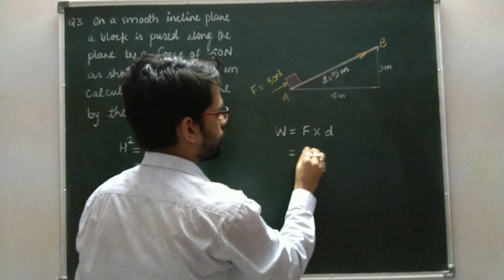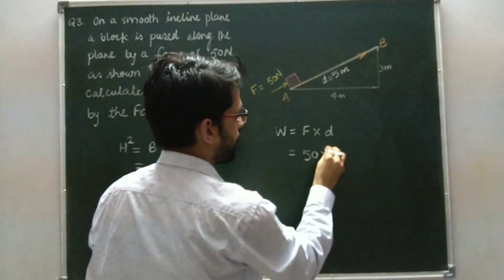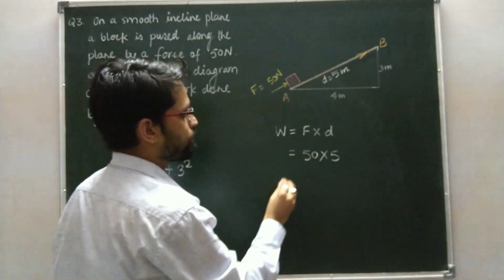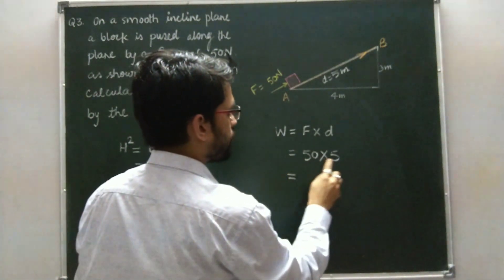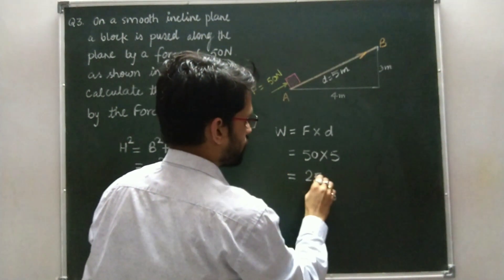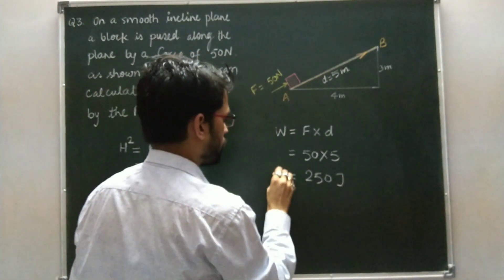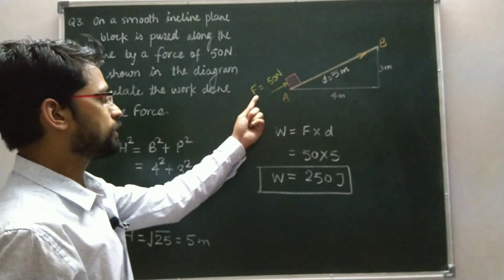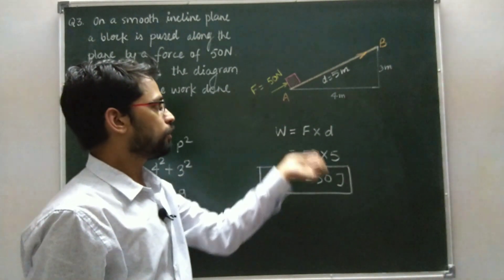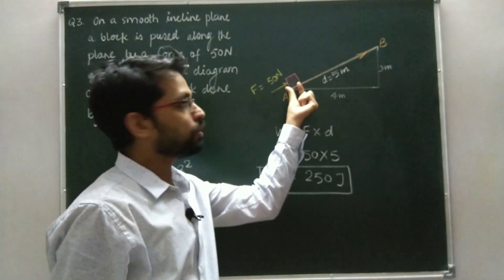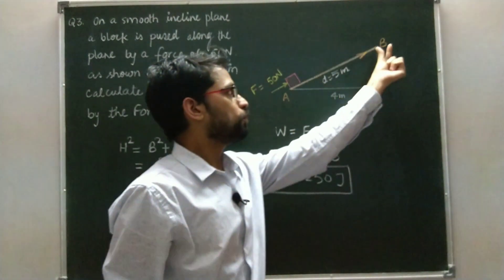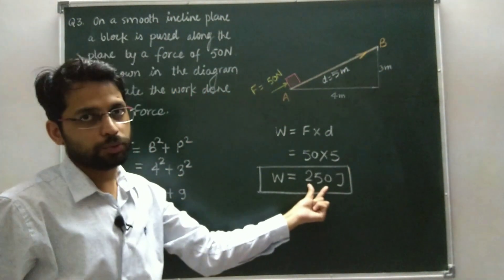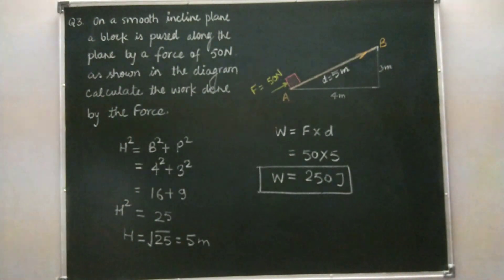In this case, the force is 50 Newton and the displacement is 5 meters. So work done = 50 × 5 = 250 Joule. The work done by this force in pushing the block from point A to B along the plane is 250 Joule.